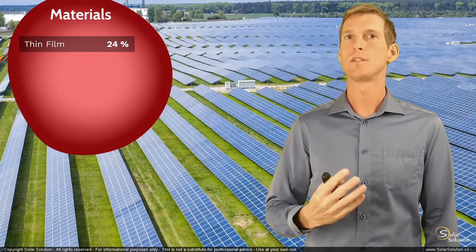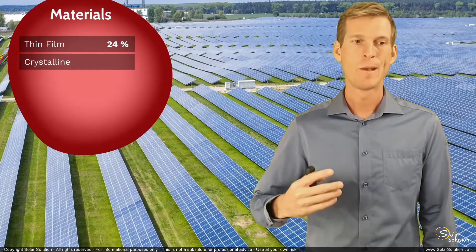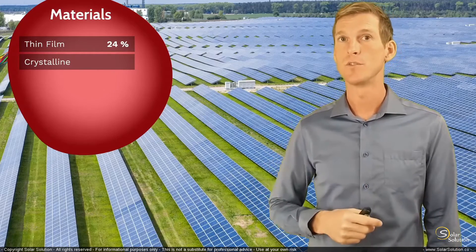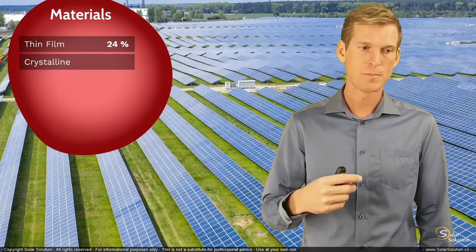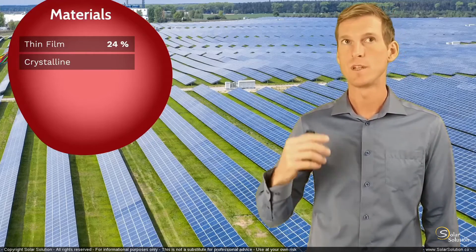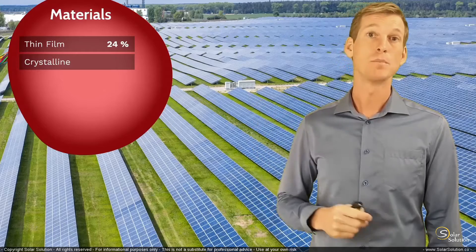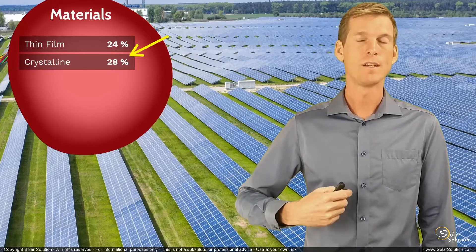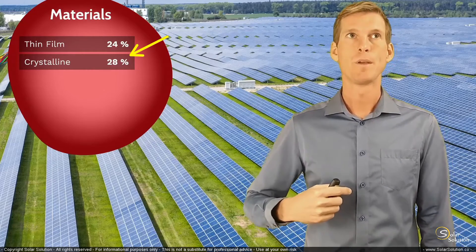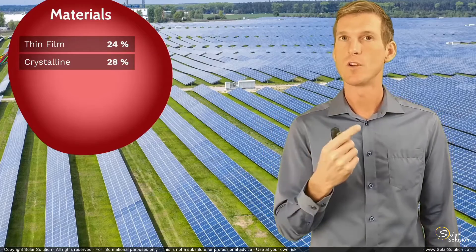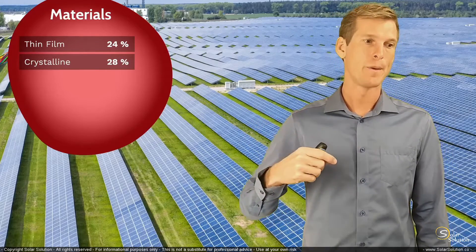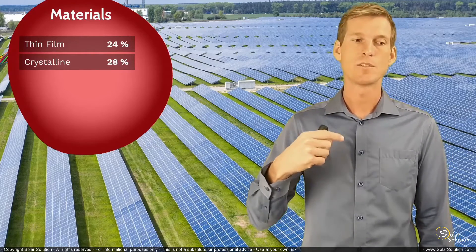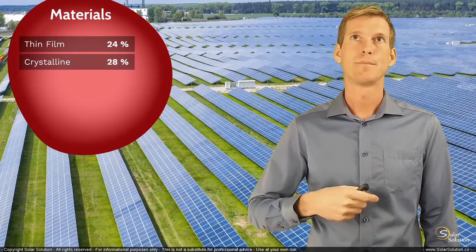The second group is crystalline materials — monocrystalline, polycrystalline, etc. This is currently the most frequently used type of material to build solar panels. The maximum efficiency within the crystalline materials group is 28 percent. That four percent extra efficiency is normally a huge advantage, and most solar panels use crystalline material because it's more affordable, gives higher yields, and is easier to produce.